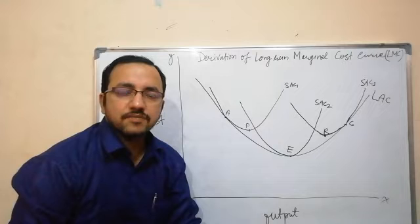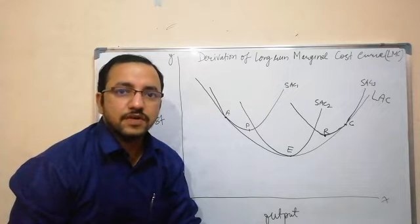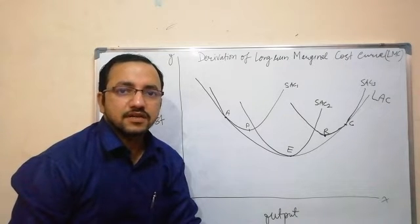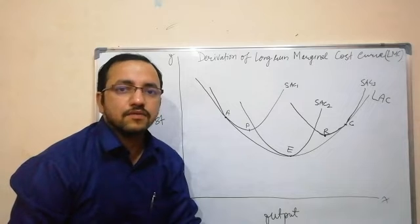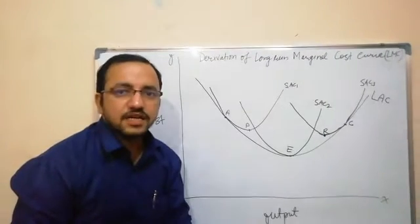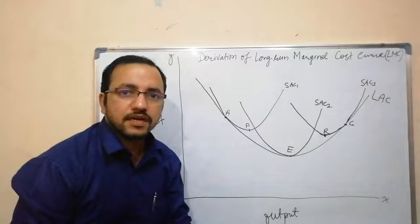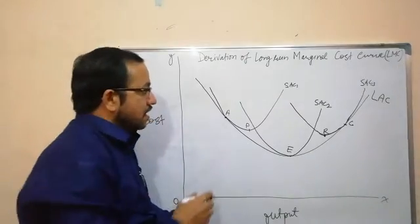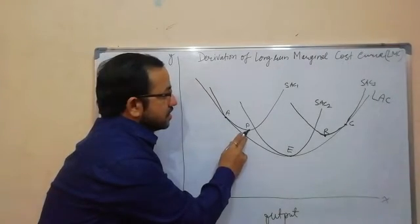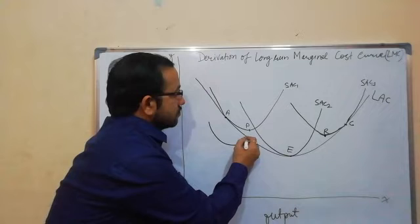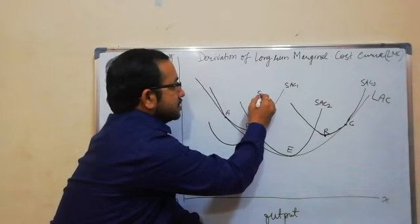In short, when the average cost declines, marginal cost will lie below the average cost. At the minimum point of average cost, the marginal cost will be equal to average cost. And when average cost increases, the marginal cost will lie above the average cost. Since there are three short-run average cost curves, there will be three short-run marginal cost curves: SMC1, SMC2, and SMC3. The minimum point of SAC1 is P, so we will draw SMC1 that will cut SAC1 at its minimum point P.